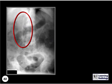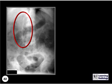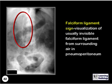What is the name of this sign? This is the falciform ligament sign, which is visualization of the usually invisible falciform ligament along the anterior edge of the liver from air surrounding it, as in pneumoperitoneum.